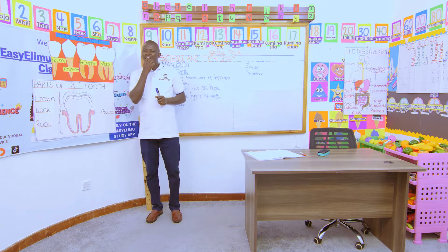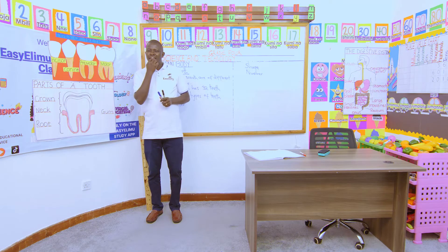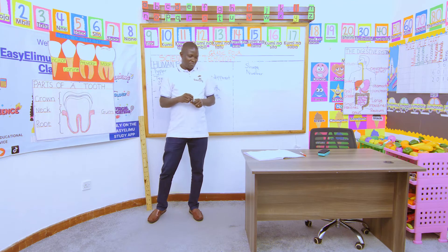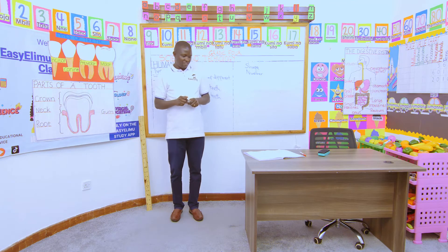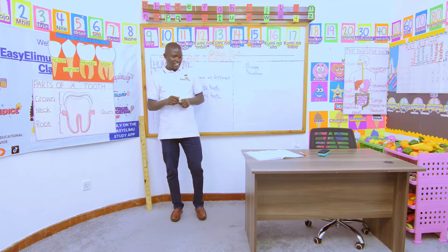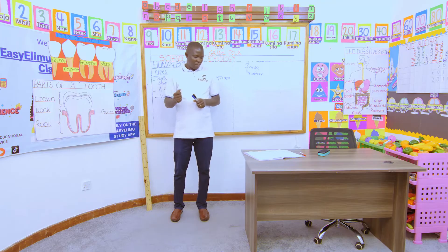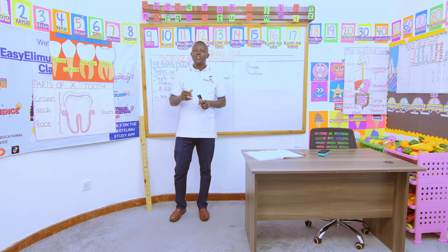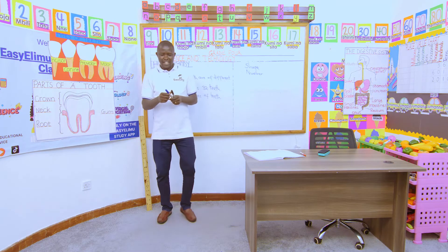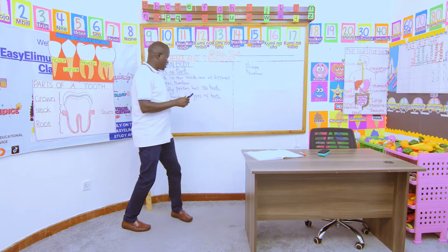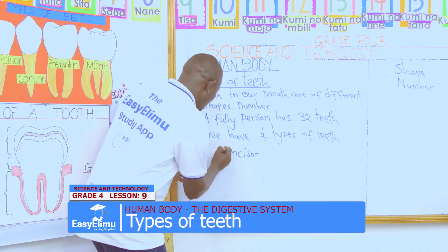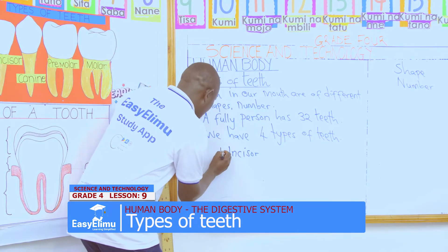The first type we call incisors. Can you count how many of them do you have? In incisors, how many of them do you have? A fully grown person has eight incisors. So when you grow up, you'll have eight incisors.